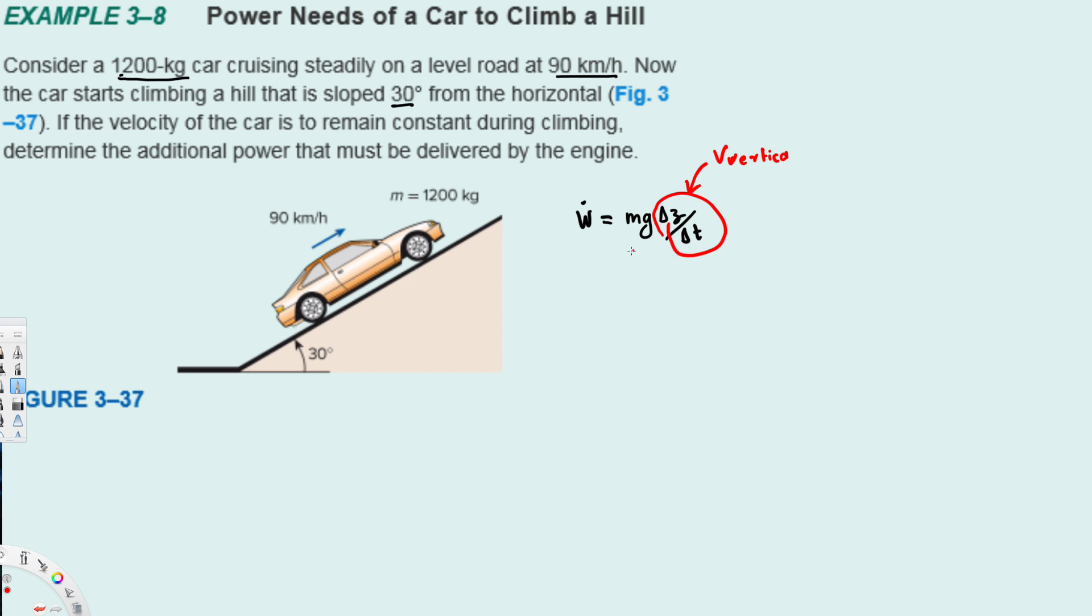So here we are going to use sine 30 to find the vertical component of this speed. Therefore, this is going to be v sine 30. Let's replace this equation: mg v vertical.